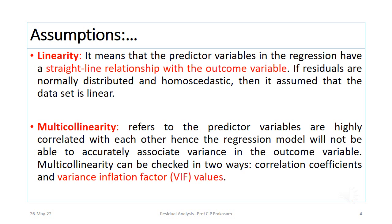The fourth assumption is the absence of multicollinearity. Multicollinearity refers to when the predictor variables are highly correlated with each other, and hence the regression model will not be able to accurately associate the variance in the outcome variable. Multicollinearity can be checked in two ways: one is the correlation coefficients, and another is the Variance Inflation Factor (VIF) value.